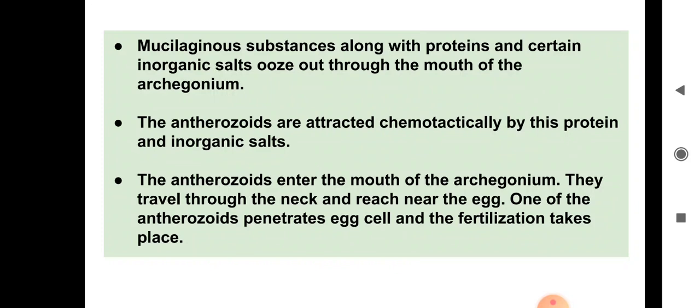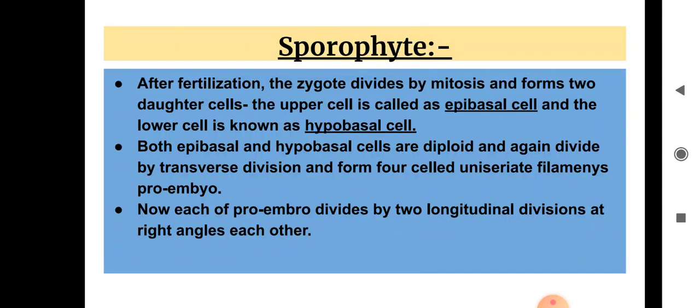As a result of fertilization, a diploid zygote is formed. After fertilization, the zygote divides by mitosis. This transverse division forms two daughter cells: an upper epibasal cell and a lower hypobasal cell. Since mitosis is an equational division, the chromosome number remains the same — the diploid complement is maintained in both epibasal and hypobasal cells.